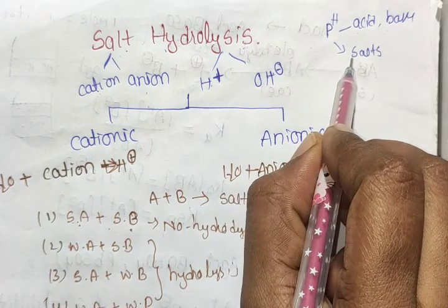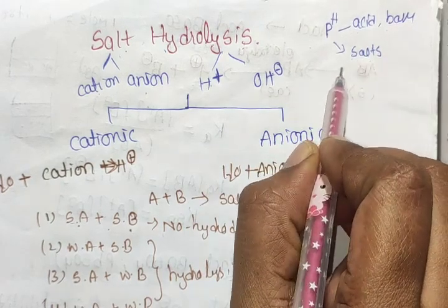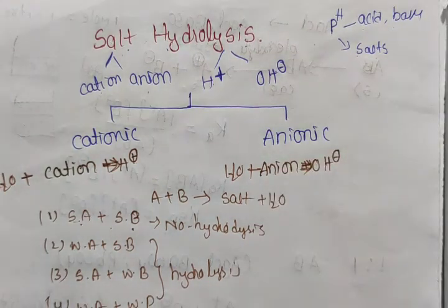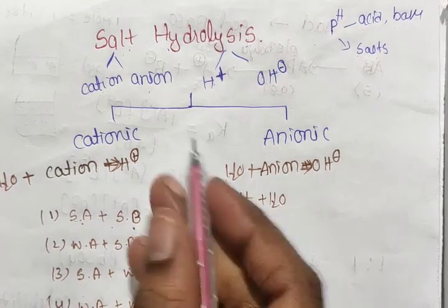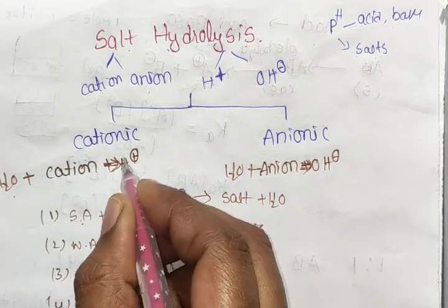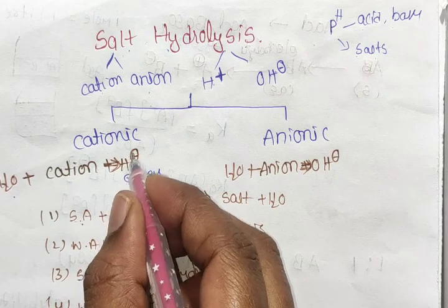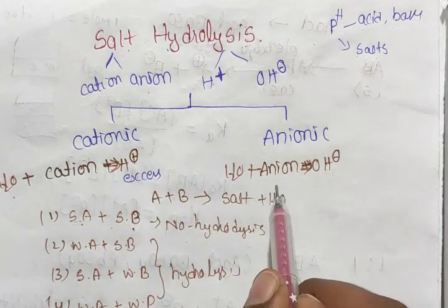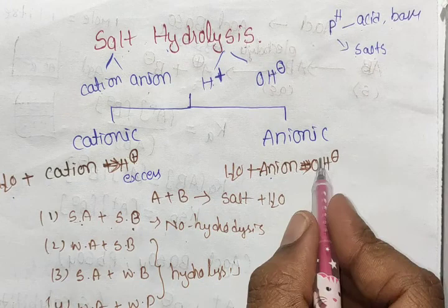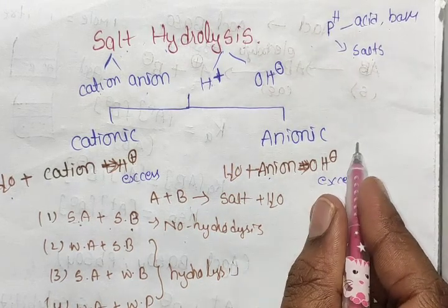If you use the basic acid in salt, it will be basic or acidic in nature — cationic and anionic. Cationic means cation reacts with water, giving excess H⁺. That is cationic hydrolysis. In the same way, anion plus water react giving OH⁻; that is anionic hydrolysis.